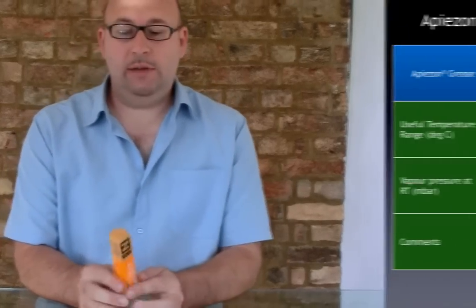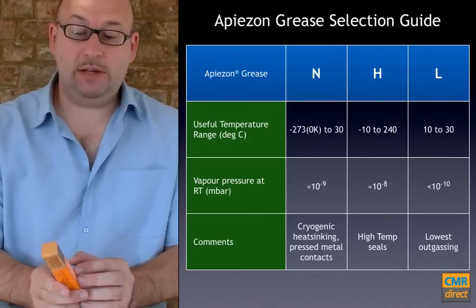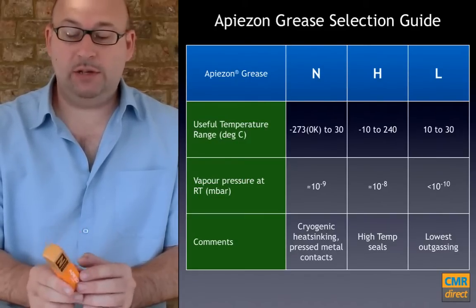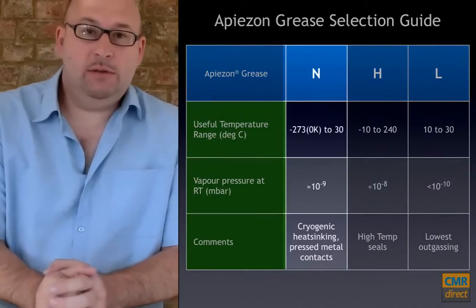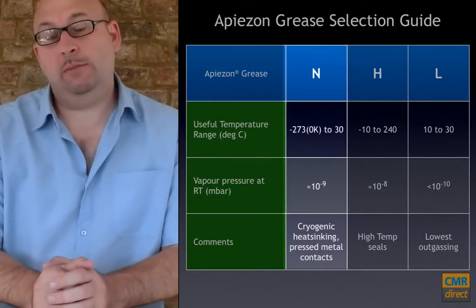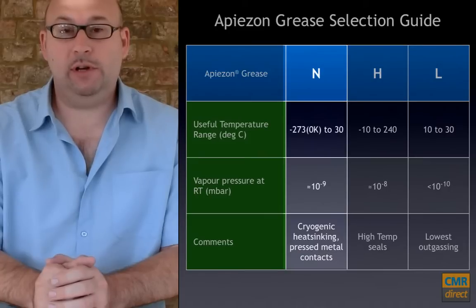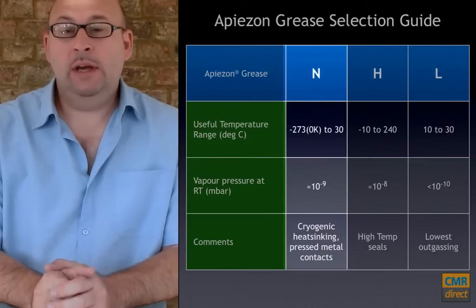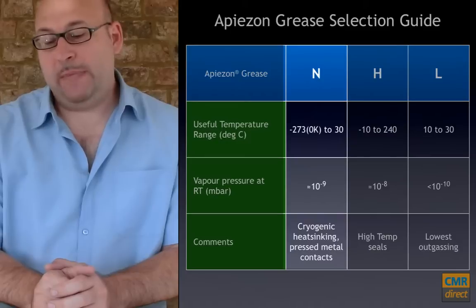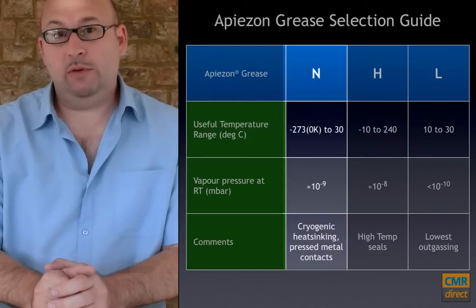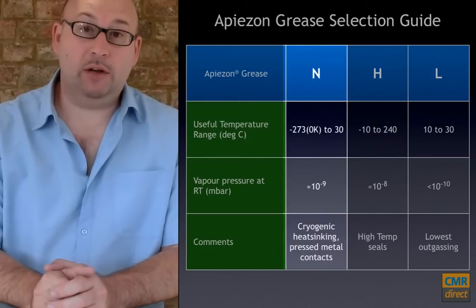Traditionally, the most popular grease of the Apiezon range used for cryogenic applications is Apiezon N. That has been used for making thermal contacts for thermometers for many years — just press the thermometer into a drilled hole full of grease. When it freezes you get a thermal contact, and it can also be used for significantly improving the thermal conductivity of pressed metal contacts.